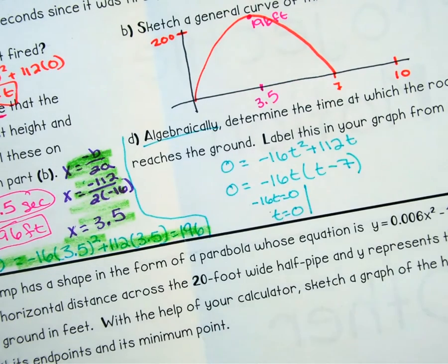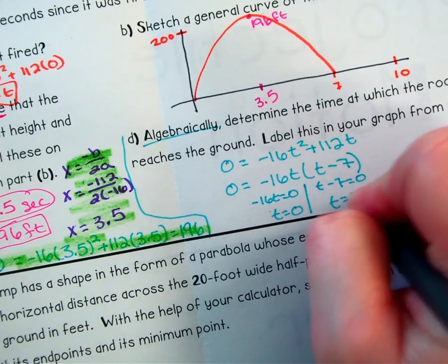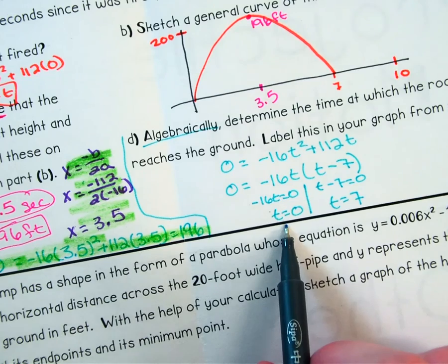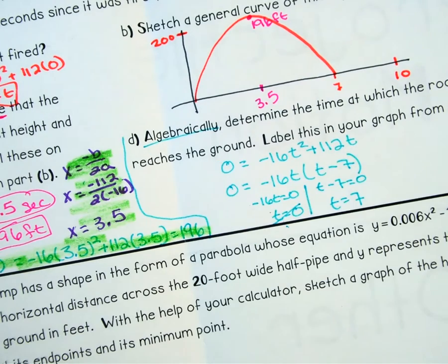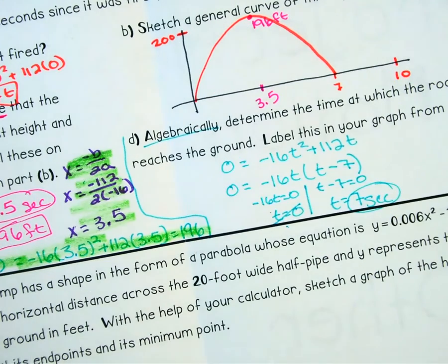So that negative 16t, when I set it equal to 0, I would divide by that 16, so I would get t equals 0. Again, this side, we set it equal to 0, and my 7, so I get t equals 7. It doesn't reach the ground at 0. So that's not actually going to be our answer. It reaches the ground at 7 seconds.